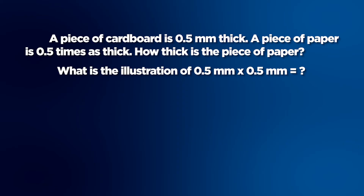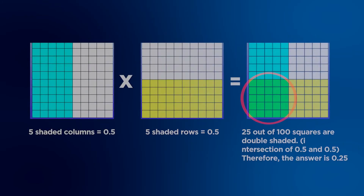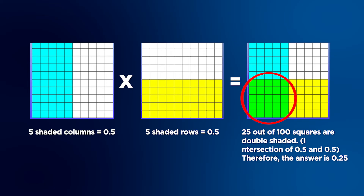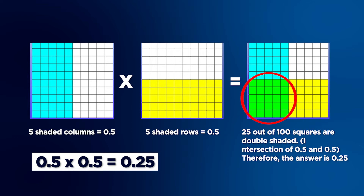Let's check if you illustrated your answer well on multiplying decimals using pictorial models. 0.5 will be shown in the grid as 5 out of 10 columns shaded, multiplied by 0.5 shown as 5 out of 10 rows shaded. When the horizontal and vertical lines are placed over each other, 25 out of 100 squares are double-shaded — the intersection of 0.5 and 0.5. Therefore, 0.5 x 0.5 = 0.25. What is your answer, kids? 0.5 x 0.5 equals 0.25. Correct!